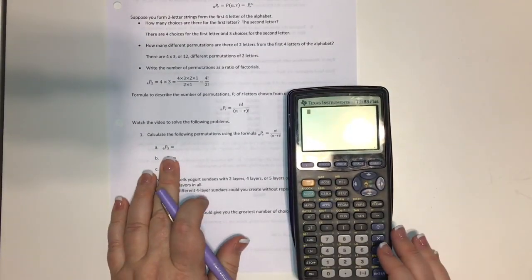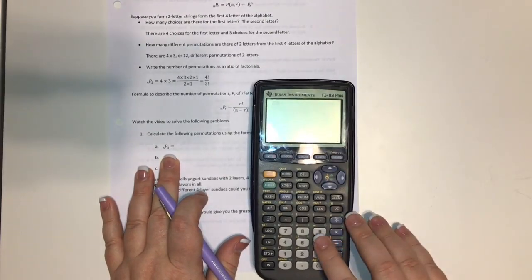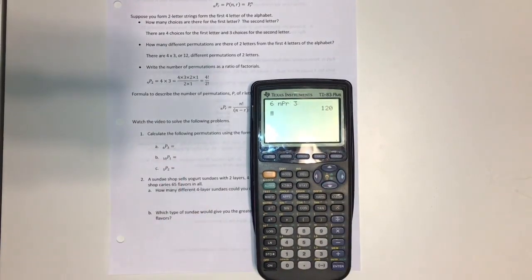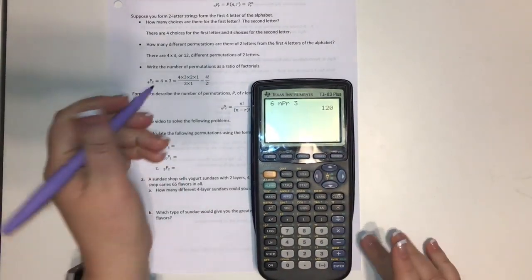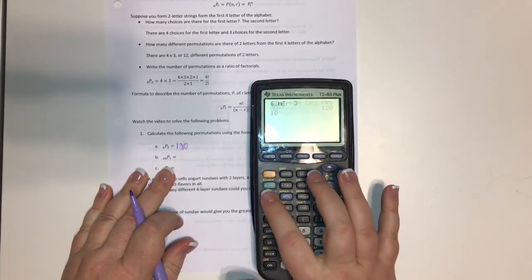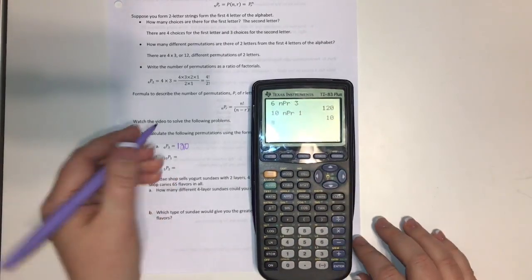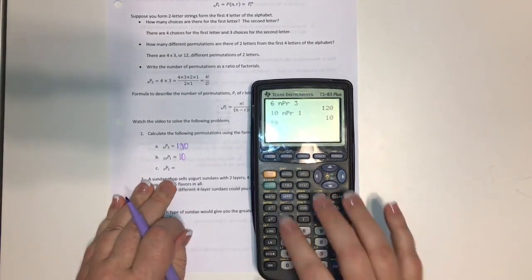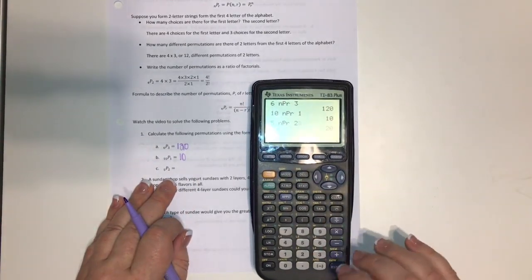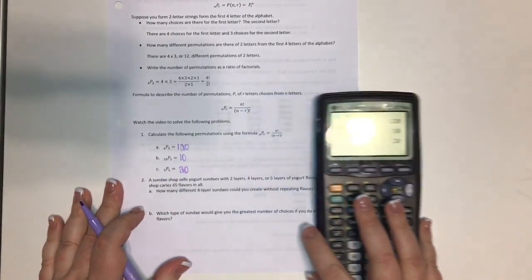So the first one is 6 permutation 3, so we're just going to put that in our calculator. 6, math, go to NPR, 3, and we get 120. Now we're going to do the same thing with 1. And you can see this goes quite quickly. Once we figure out how to use the calculator, it is to our advantage to use it.